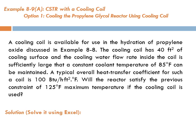Example 8-9A: CSTR with a cooling coil — cooling the propylene glycol reactor using a cooling coil. A cooling coil is available for the hydration of propylene oxide discussed in example 8-8. The cooling coil has 40 feet of cooling surface, and the cooling water flow rate is sufficiently large that a constant coolant temperature of 85°F can be maintained. A typical overall heat transfer coefficient for such a coil is 100 BTU/hr·ft²·°F.